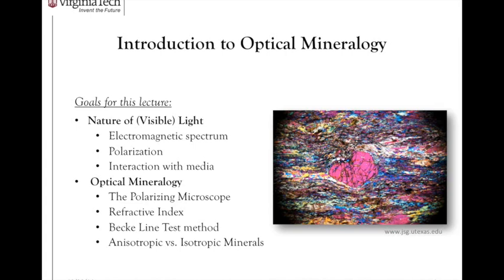On the right, you're seeing a thin section of a rock that has a pseudo-hexagonal crystal in the center. This is under cross-polars, so the light is polarized passing through this thin section. You can see the beautiful interference colors that occur — that's the interaction of that polarized light with the crystals in this rock specimen.